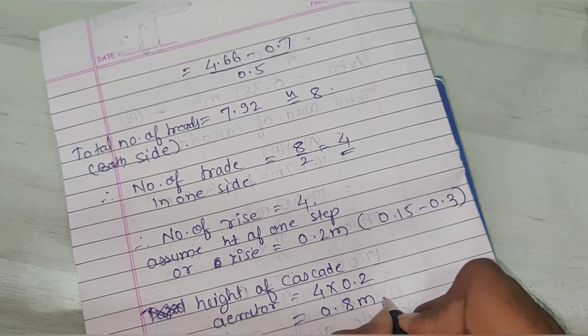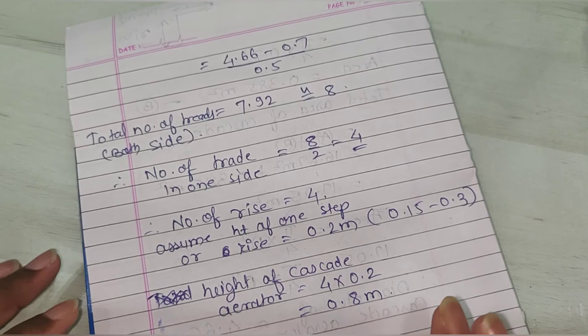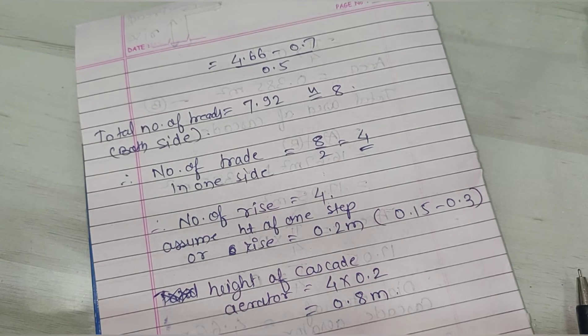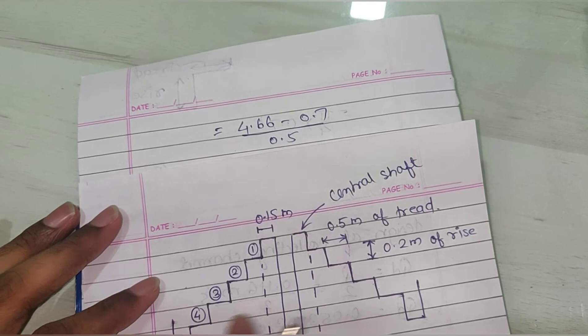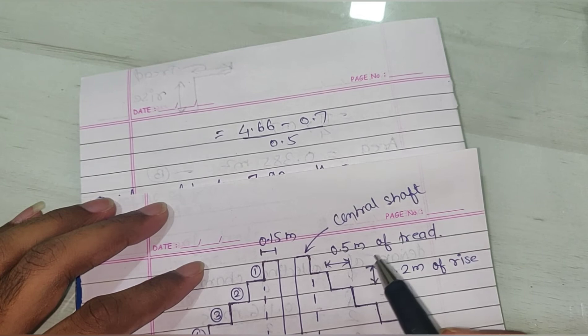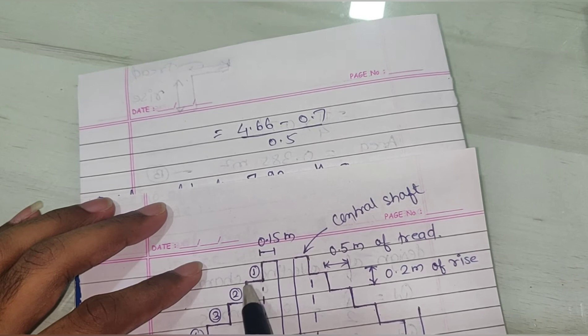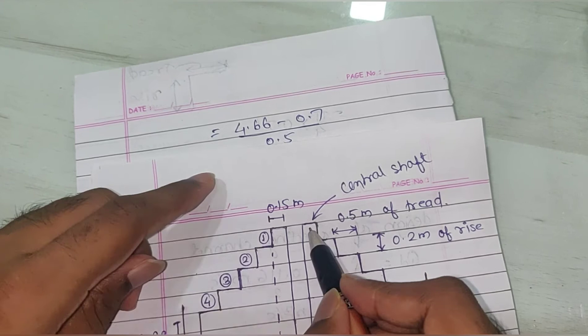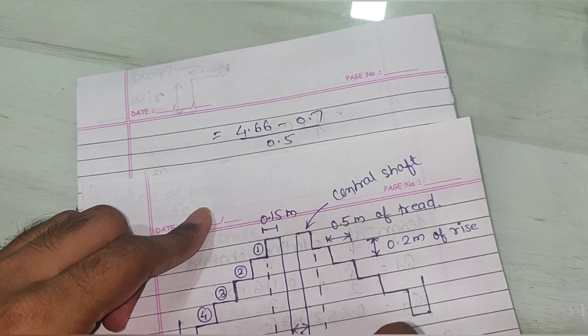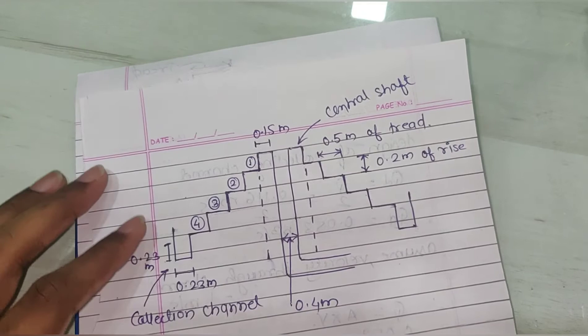Now I will show you the diagram for this design. Based on the design, I have already drawn this diagram. We have calculated the total number of steps as 4 — step one, two, three, four. Number of rises: one, two, three, four. Thickness of the central shaft is 0.15 meter. Diameter of the pipe is 0.4 meter.